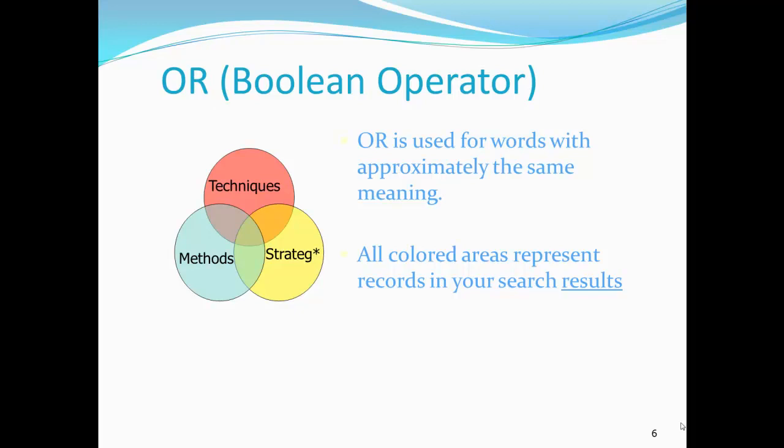OR is one of the Boolean operators we often use in searching. The OR operator is useful in expanding the number of search results returned. OR is used with words that have approximately the same meaning. In the visual of three overlapping circles, the pink, blue, and yellow areas represent records in your search results when you use the Boolean operator OR.